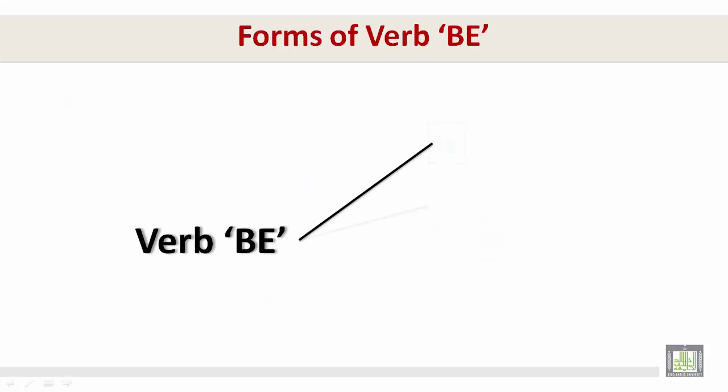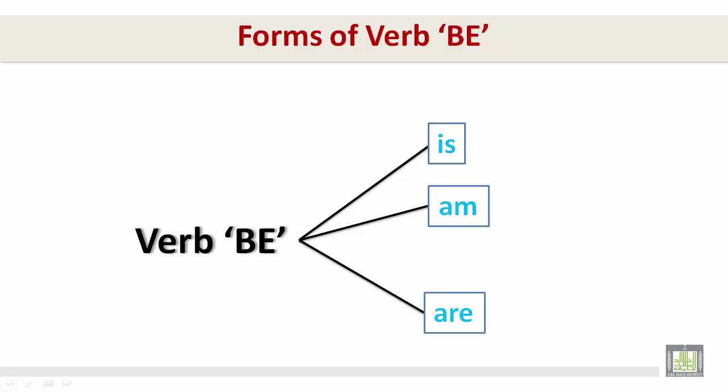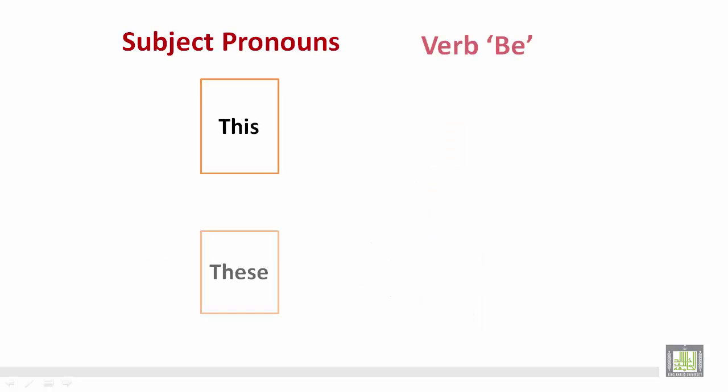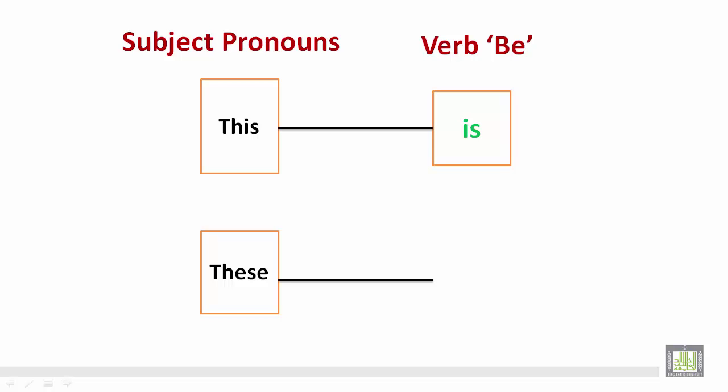The verb be forms are: is, am, are. The subject pronouns 'this' and 'these' correlate with the verb be as follows: 'this is' and 'these are'. 'This' is singular; 'these' is plural.